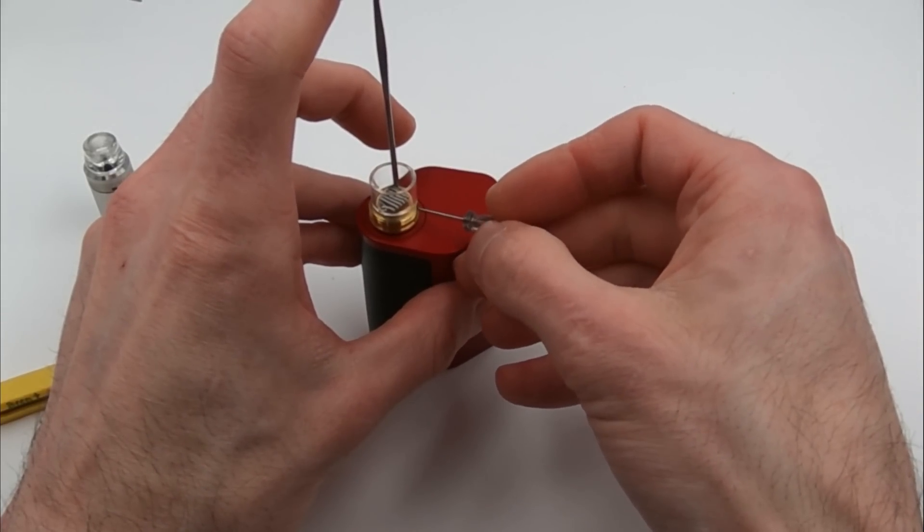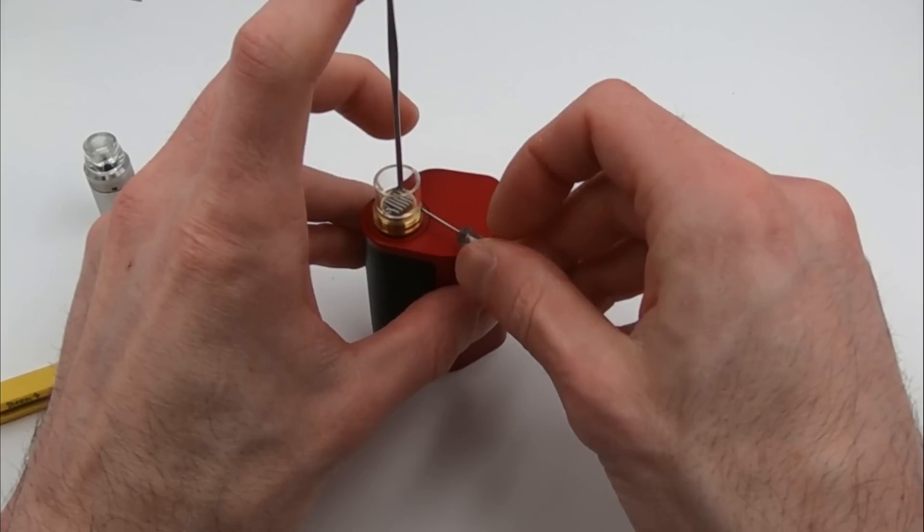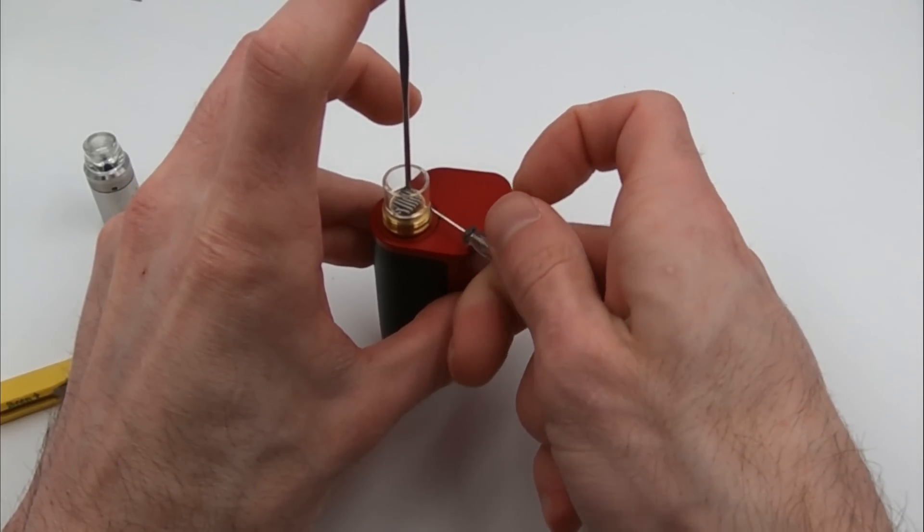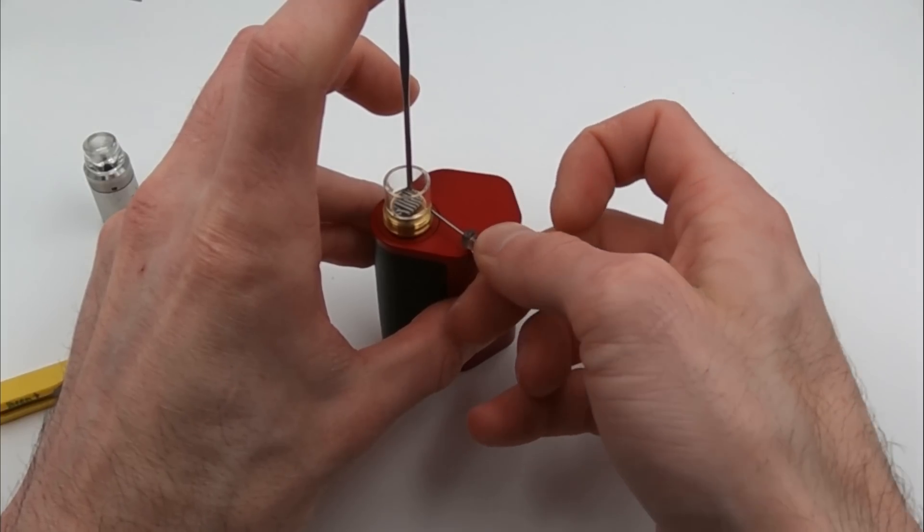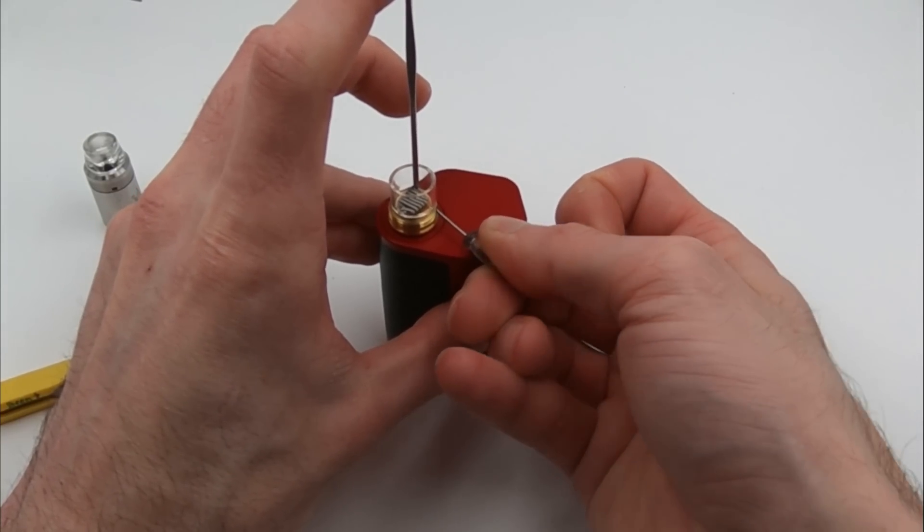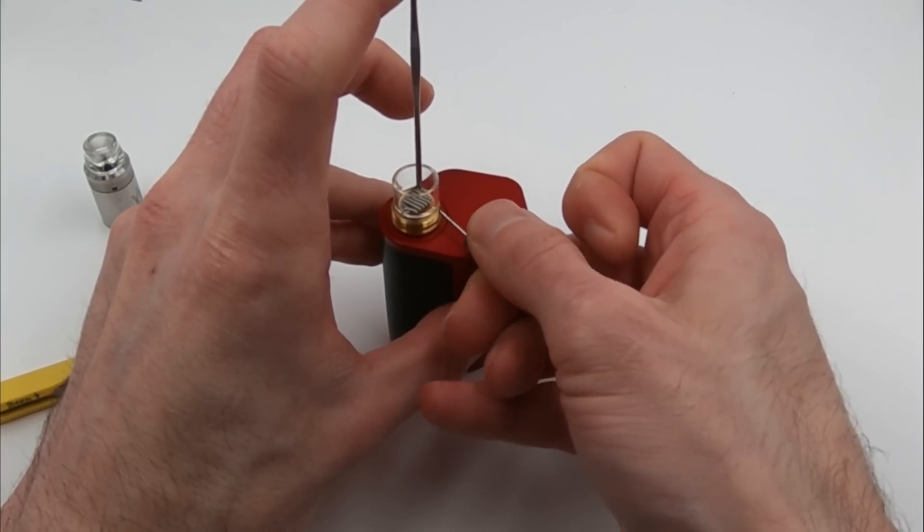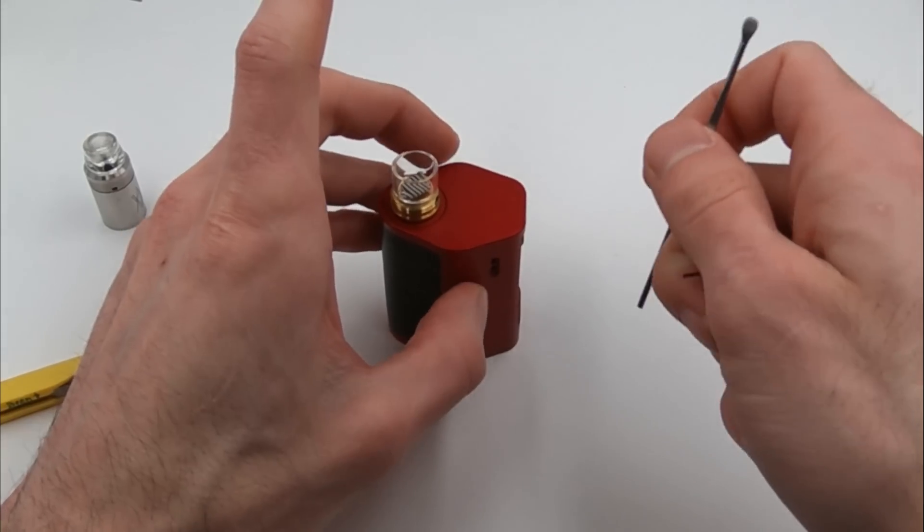So now we'll hold this side down. Again, we're not going to hold it down very hard, just want to kind of pin it down. Same with the leg, we're not going to get it super tight, just want to pin that leg down. And now we have a good flat coil.